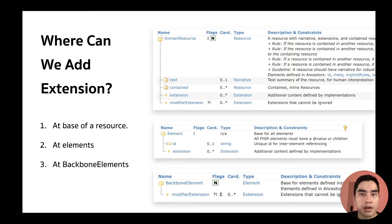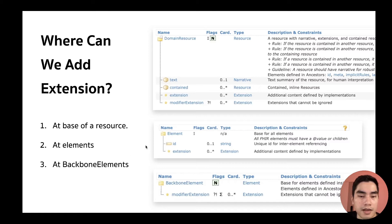Now we know what an extension is and how it looks. The next important thing is where we can add an extension. Basically there are three locations: at the base of the resource, at an element, and at a backbone element. There are two places where you can have modifier extensions: at the base of the resource and at the backbone element.